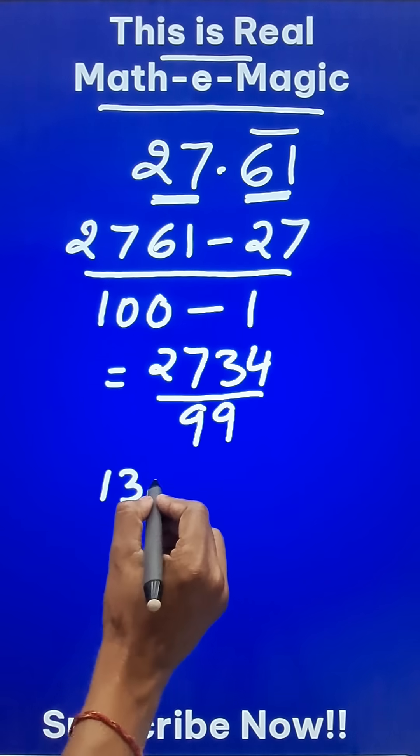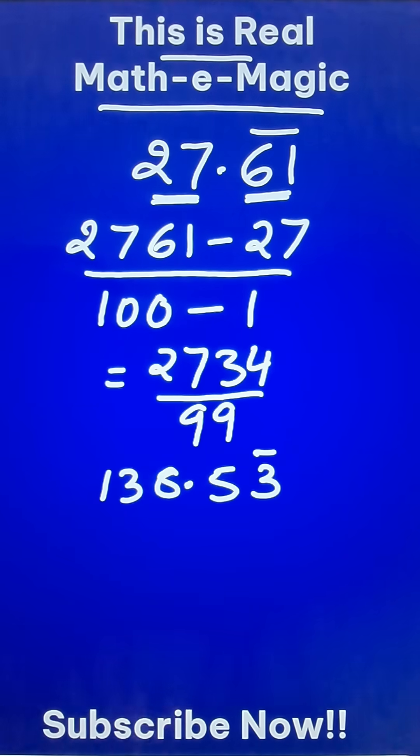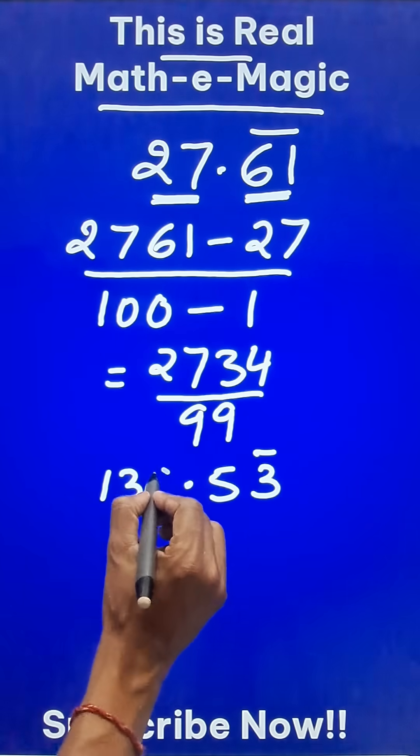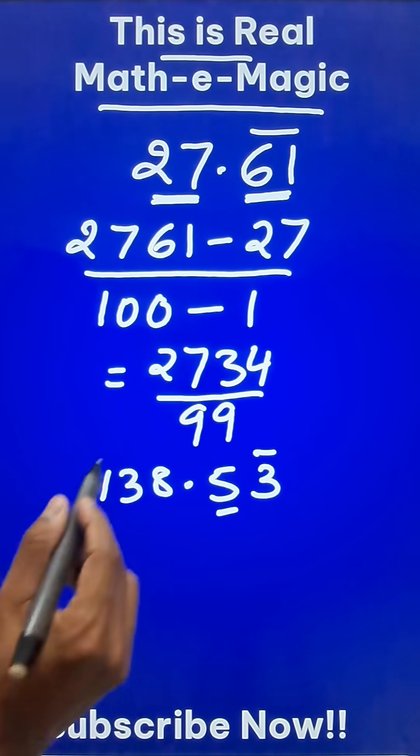Likewise, if you have 138.53 with a bar only over 3, so 53 bar—now there is a digit which is not repeating, and when that happens,